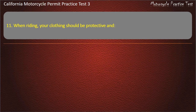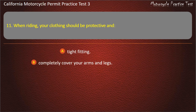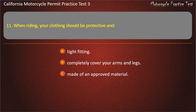Question 11. When riding, your clothing should be protective and: tight fitting, completely cover your arms and legs, made of an approved material, or loose fitting. Answer: Completely cover your arms and legs.